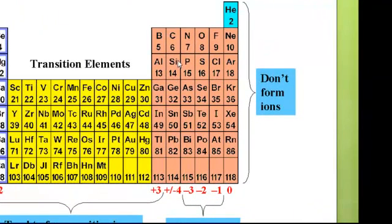Over here, the nonmetals in this general region, the halogens form negative ones. The oxygen family forms negative twos.